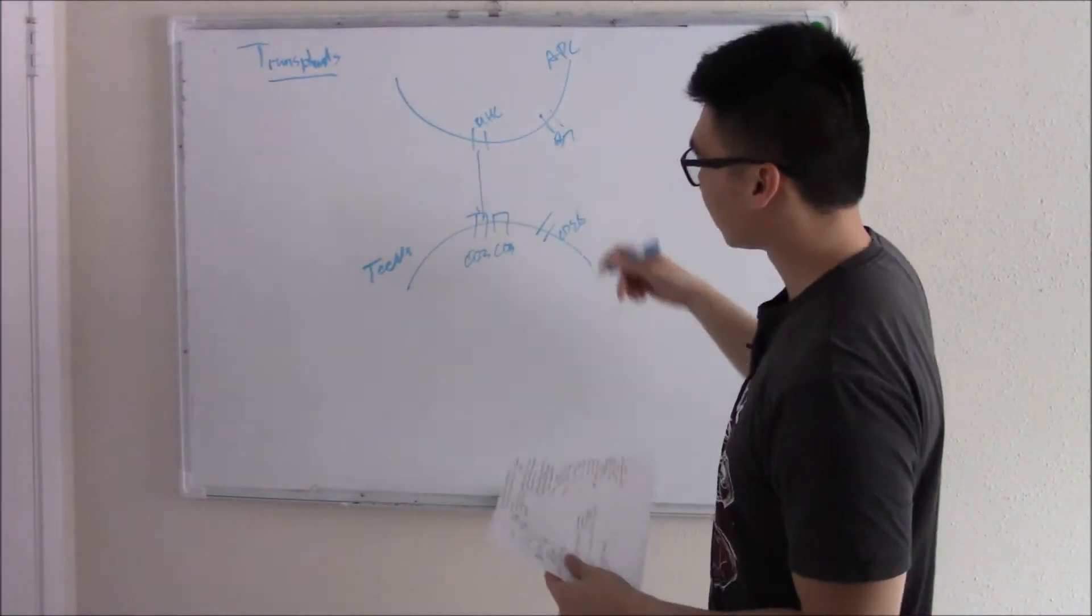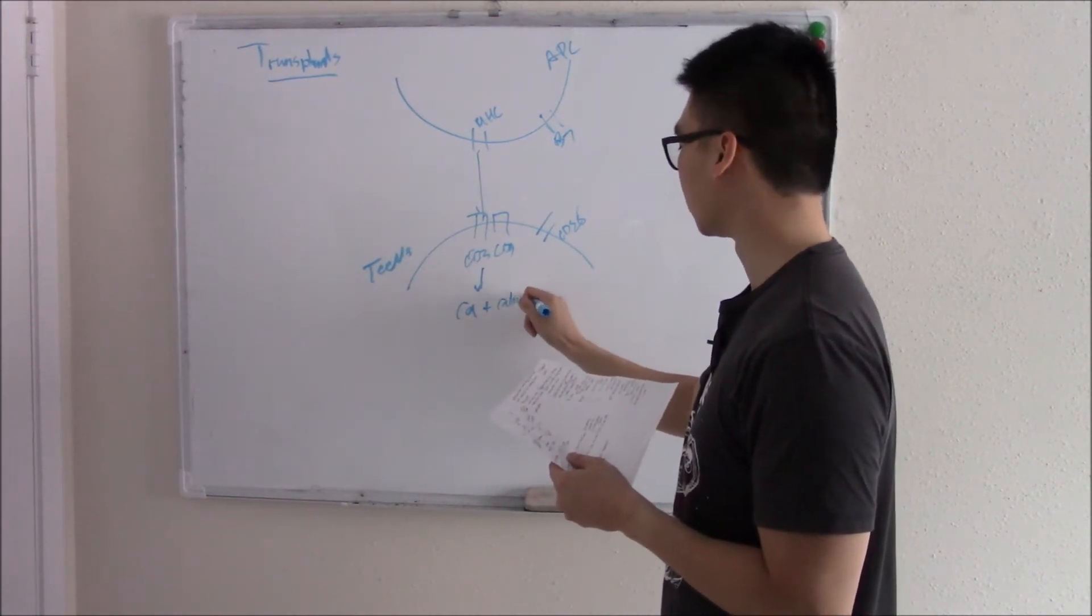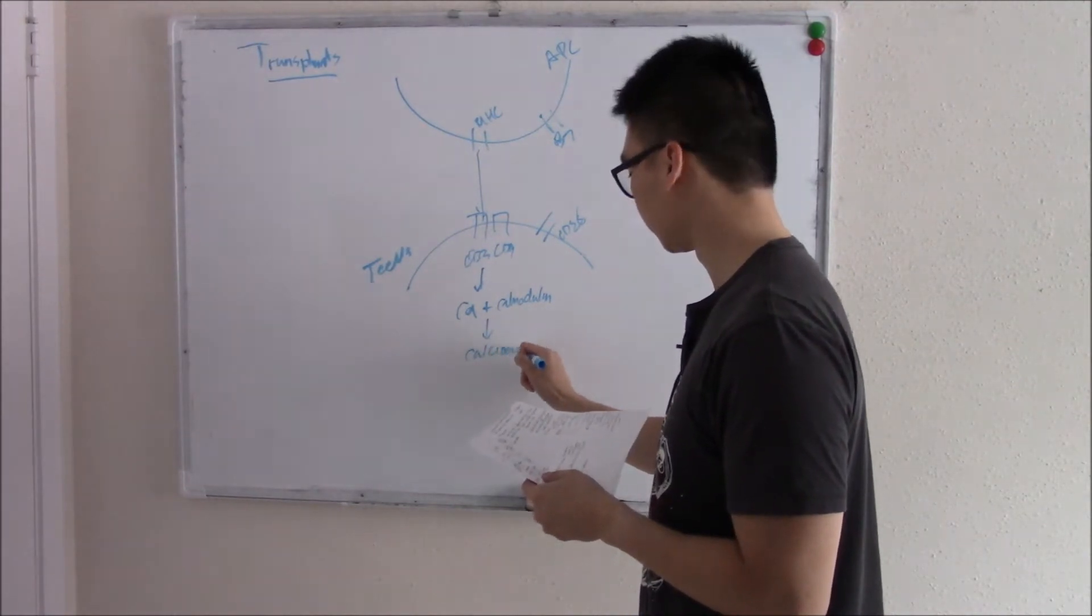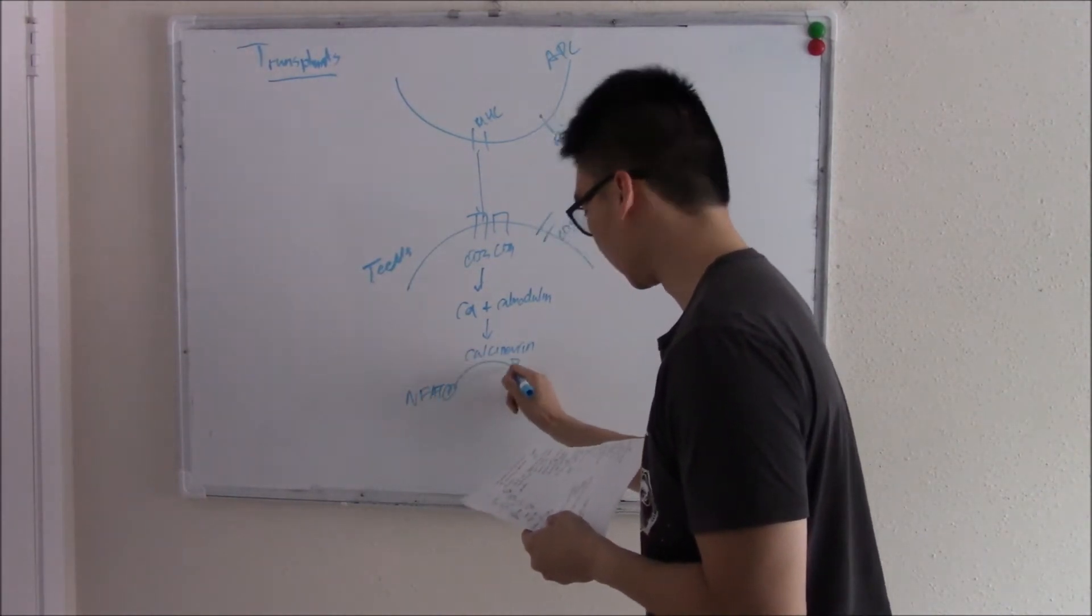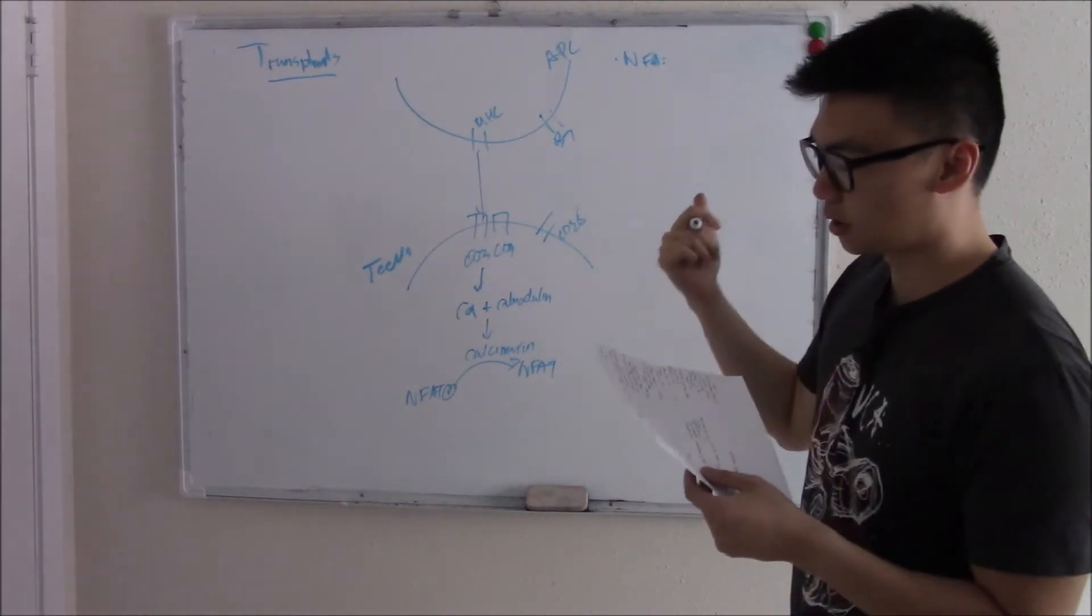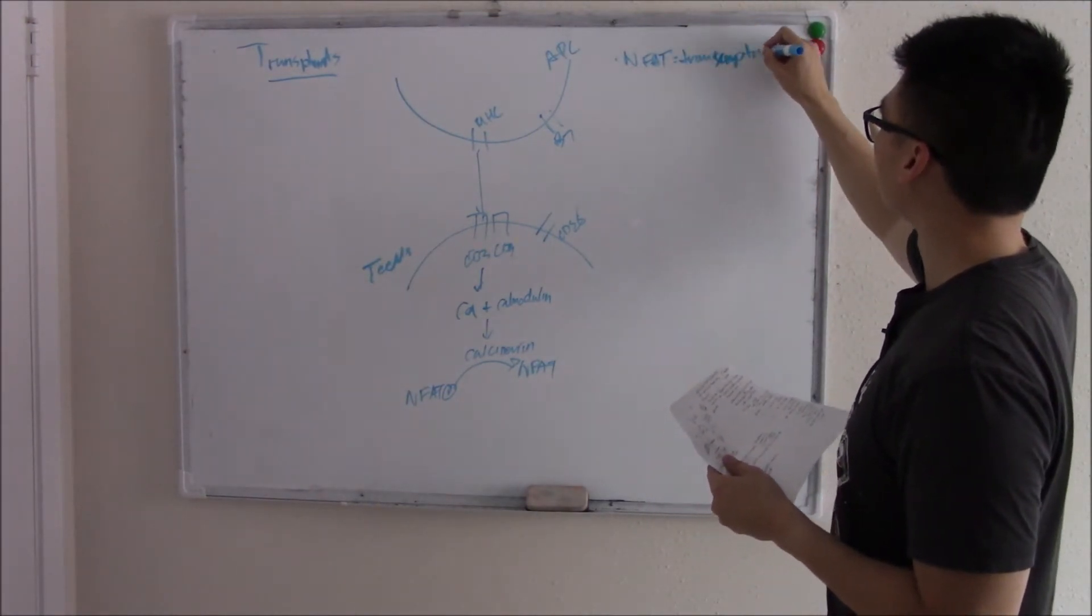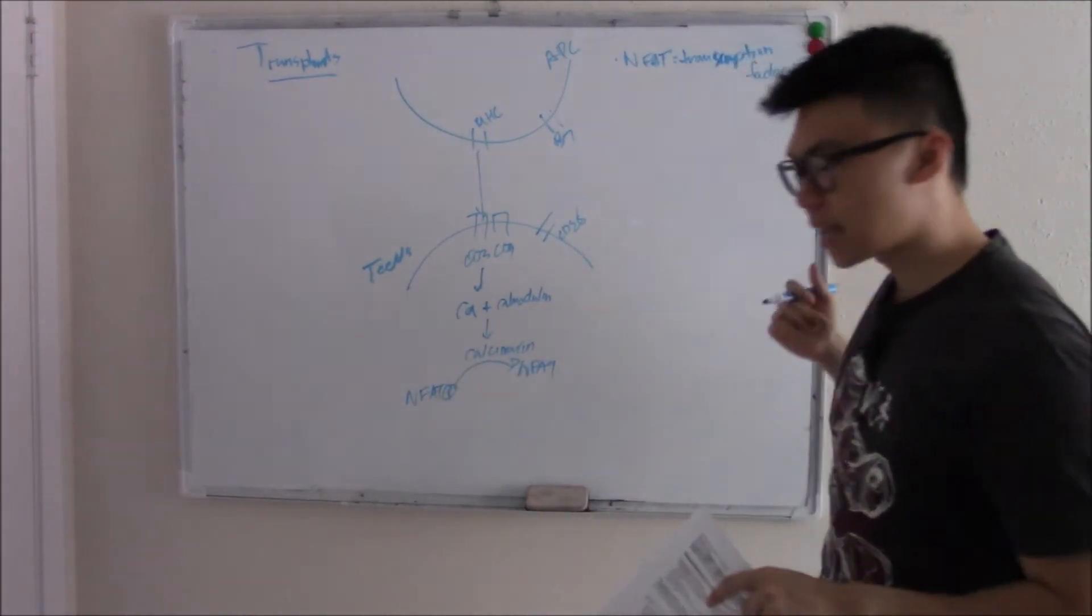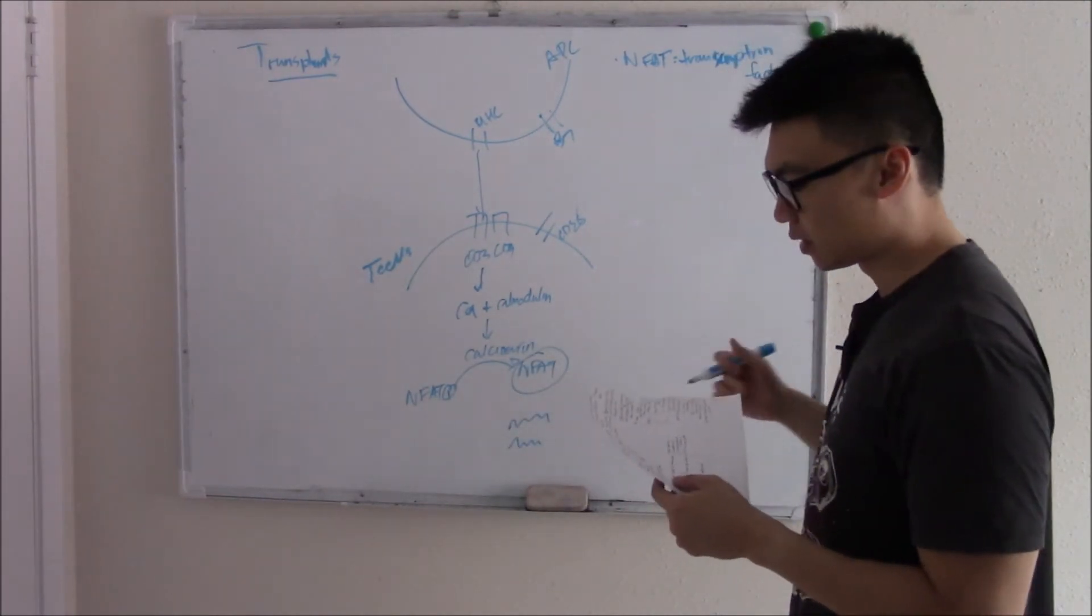If there's some co-stimulatory signal, we'll say this is CD28, B7. We activate our T cell. Your T cell gets activated, starts secreting all this stuff, starts revving up your adaptive immune system. Let's dive a little bit deeper, see how it does that in a biochemical sense. I know you don't like biochemistry, but I promise it's not that bad. When it activates, links up, calcium will influx. Calcium will influx, bind to something called calmodulin.